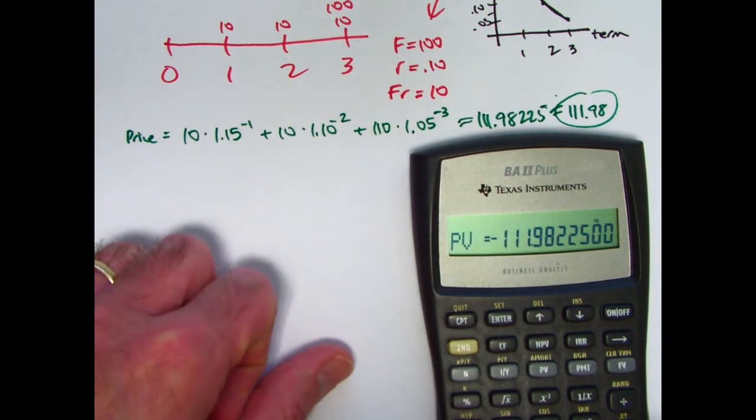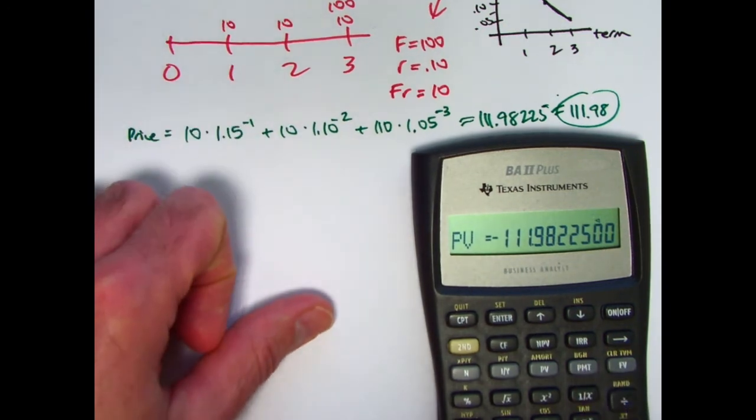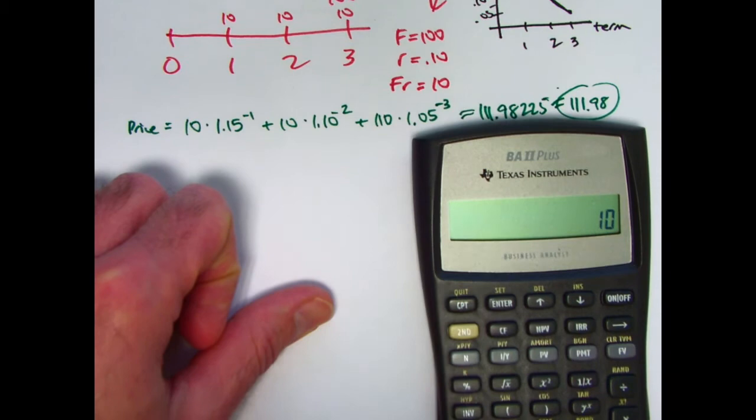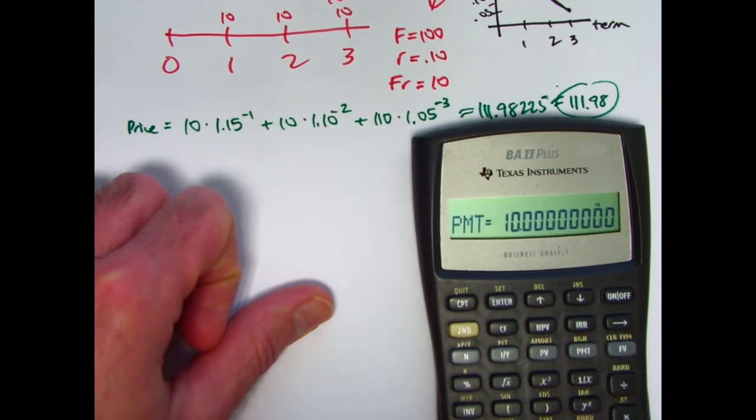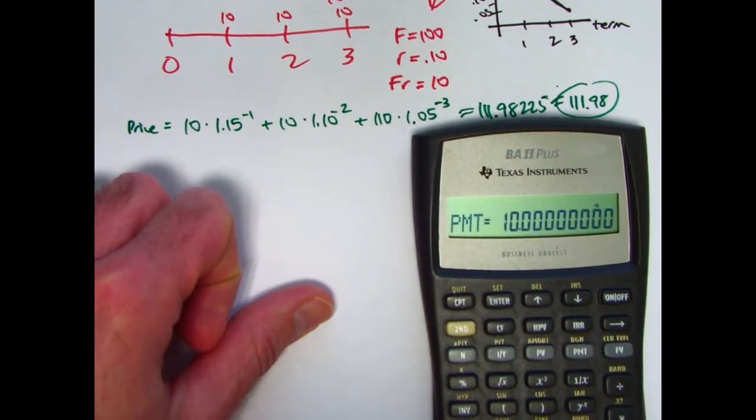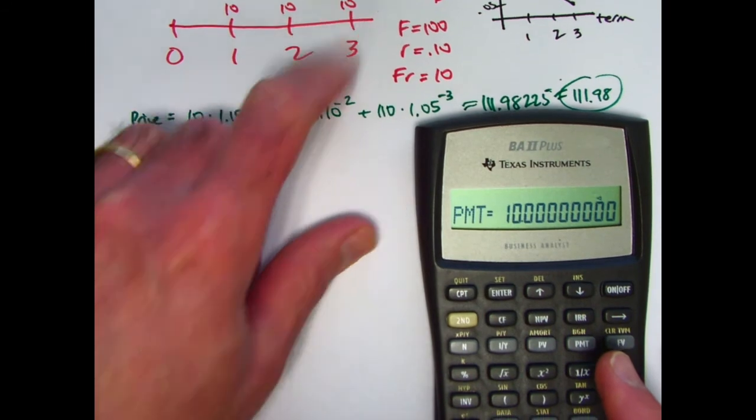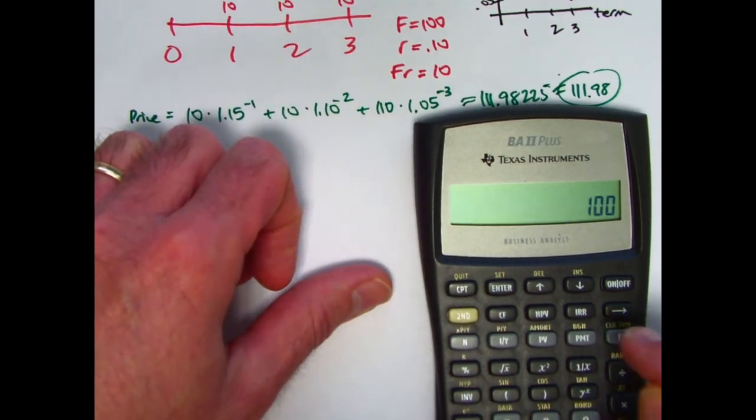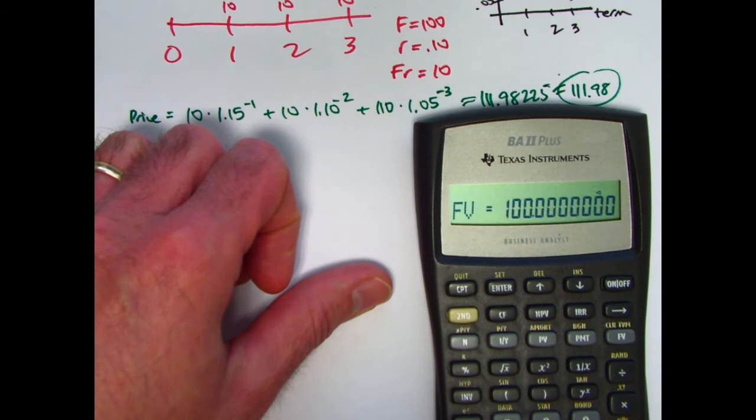And then you have the payments, which are the coupon amounts, 10. That goes into PMT. That's coming to you. So think of that as a positive amount. And then the future value, the 100 at time three, 100 for future value at time three, positive. It's coming back to you. That's what goes into FV. All right.